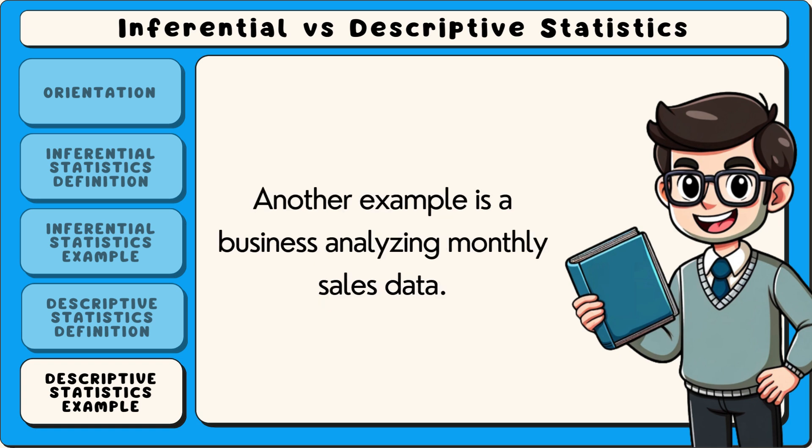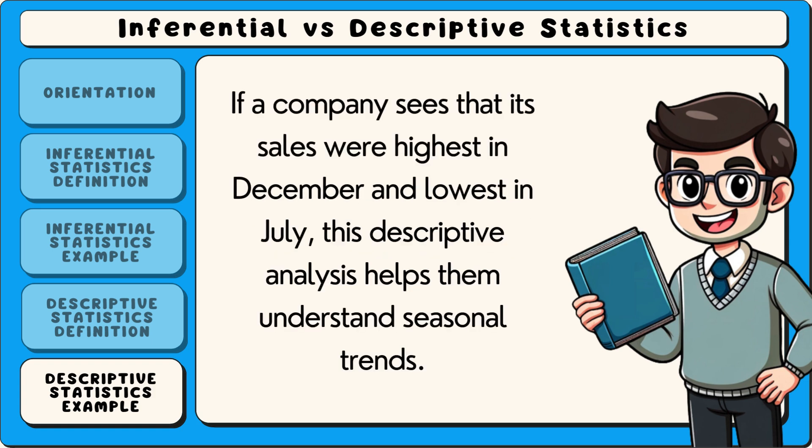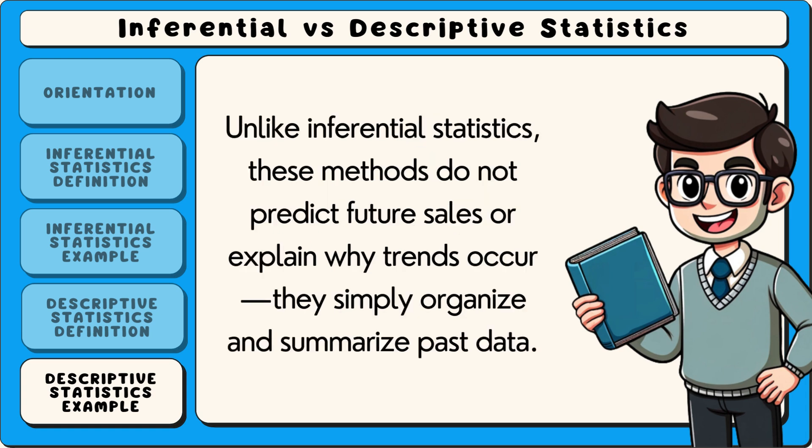Another example is a business analysing monthly sales data. If a company sees that its sales were highest in December and lowest in July, this descriptive analysis helps them understand seasonal trends. Unlike inferential statistics, these methods do not predict future sales or explain why trends occur. They simply organise and summarise past data.